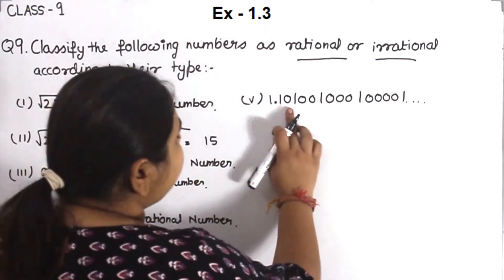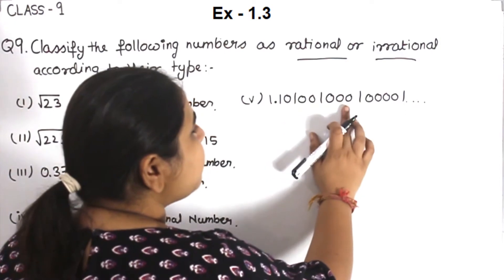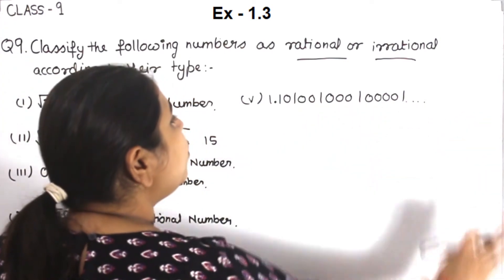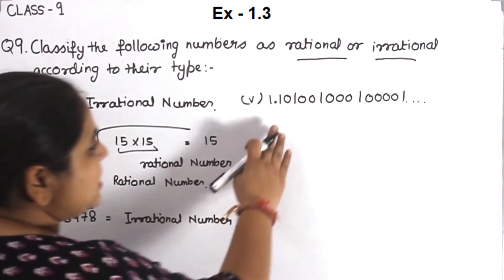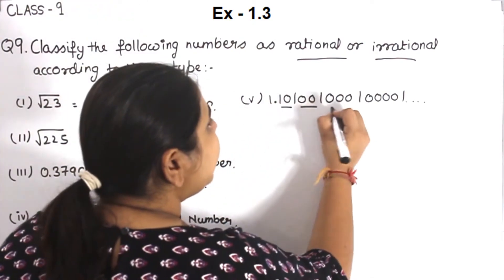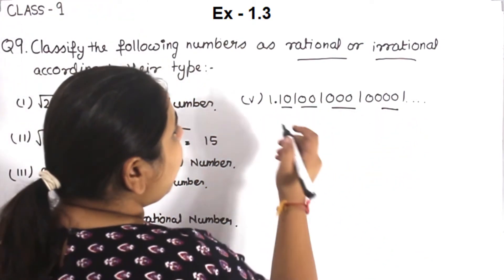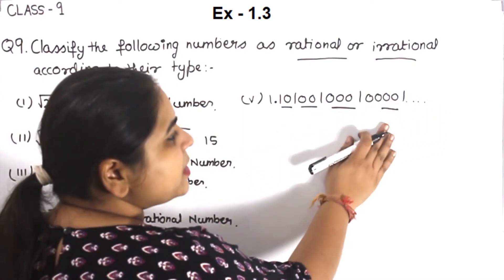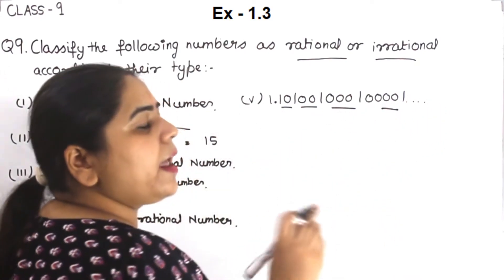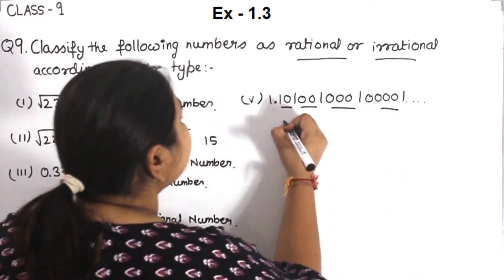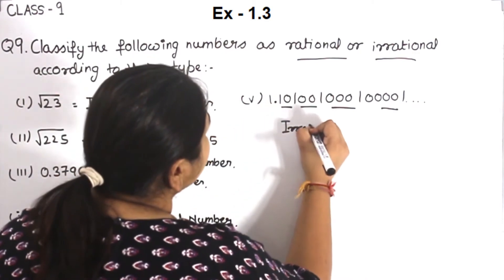Five, 1.10, 100, 1000, 10000, and so on, and continue. So this number is not repeating, that means not recurring, and still dividing, that means not terminating. Non-recurring and non-terminating numbers are irrational numbers.